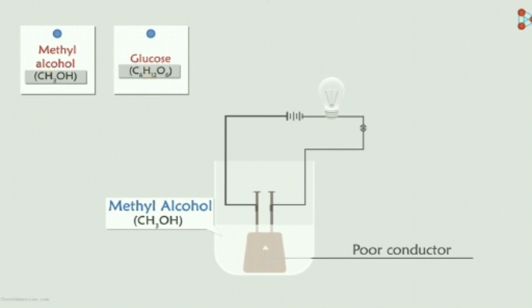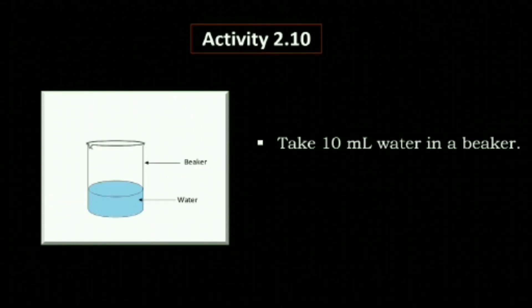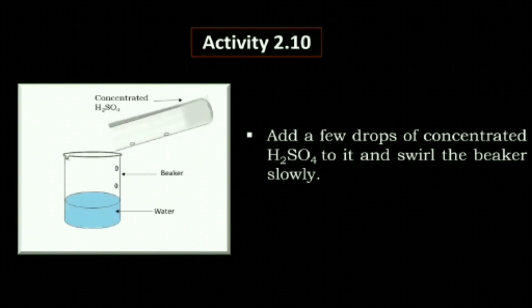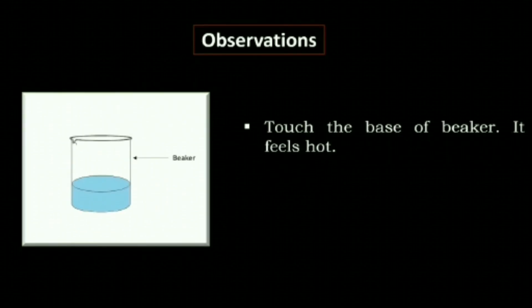These compounds have hydrogen but are not acidic because they do not dissociate in aqueous solution to give hydrogen ions. Take 10 ml of water in a beaker and add a few drops of concentrated sulphuric acid slowly while stirring. Touch the base of the beaker — it feels hot because the temperature increases. This process is known as an exothermic reaction.